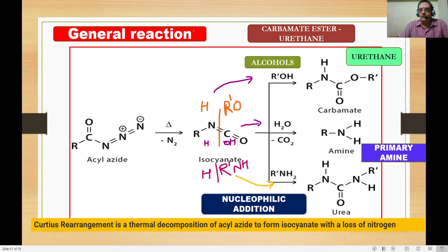Similarly, addition of water gives carbamic acid, which loses CO2 to give primary amine. Addition of a primary amine R′NH2 gives R-NH-C(=O)-NH-R′, which is urea. This approach of splitting the nucleophile makes it very easy to understand the reactions without memorizing — that is why I am describing nucleophilic addition this way.